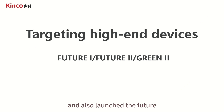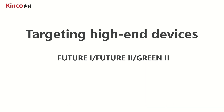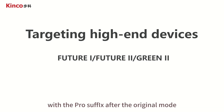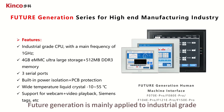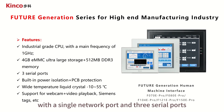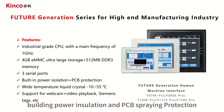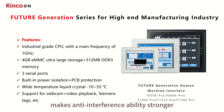We have also launched the Future 2 Generation and Green Series products. First, let's talk about the Future Generation. At this stage, the models of Future Generation are relatively complete, with a 'Pro' suffix after the original model name to represent that this model is supported by the new platform. Future Generation is mainly applied to industrial-grade CPUs with 1 GHz, 4 GB storage, and 512 MB DDR3 memory, with a single network port and three serial ports as standard.